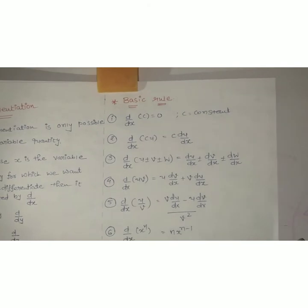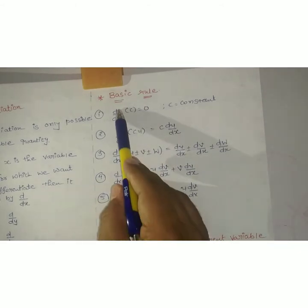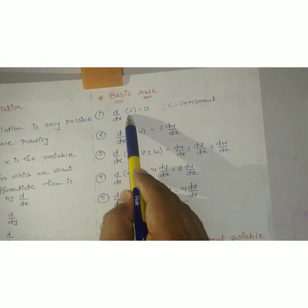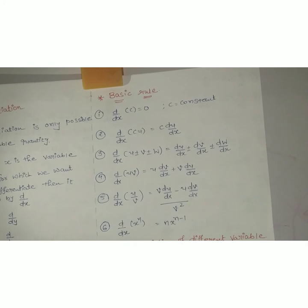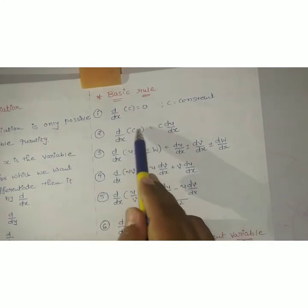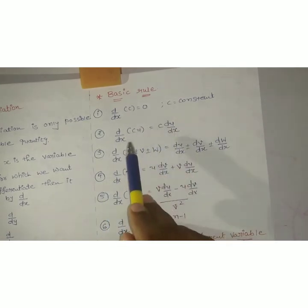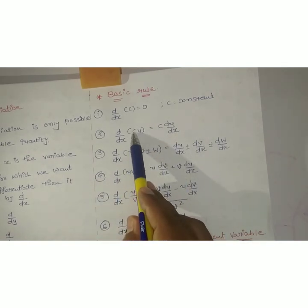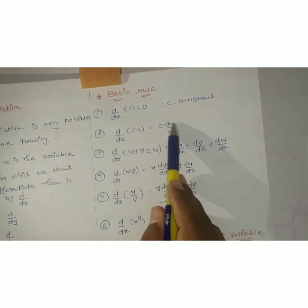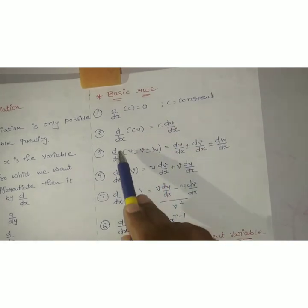Now let us start with the basic rules of differentiation. First: d by dx of c — where c is a constant — the differentiation of a constant is always zero. Second: d by dx of c·u, where c is constant and u is a variable quantity. When we differentiate, the constant value goes outside, since only the variable can be differentiated — giving c·(du by dx).